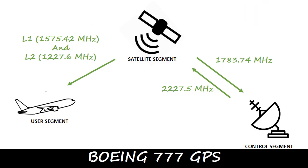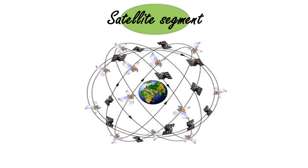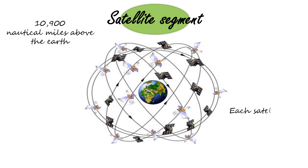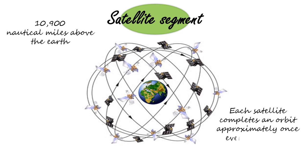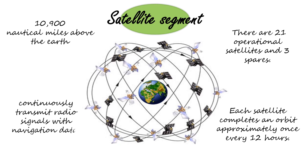The satellite segment is a group of satellites that orbit approximately 10,900 nautical miles above the Earth. Each satellite completes an orbit approximately once every 12 hours. There are 21 operational satellites and 3 spares. The satellites continually transmit radio signals with navigation data, range code, and the exact time.